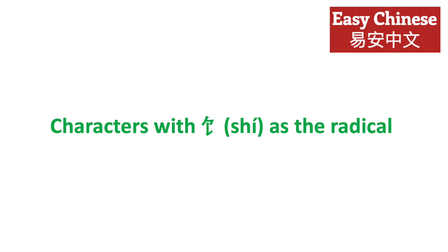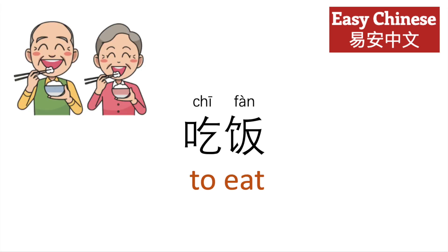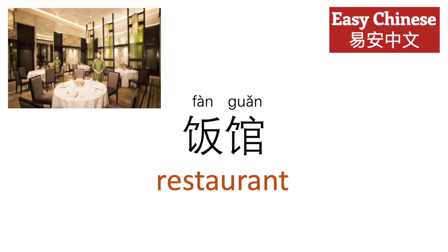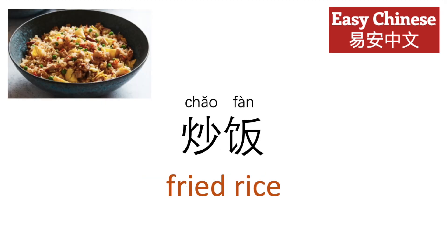Characters with 食 as the radical include 饭, meaning food or rice. And so we have 吃饭, to eat; 饭馆, restaurant; 米饭, steamed rice; and 炒饭, fried rice.